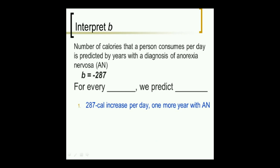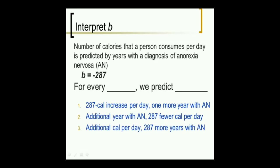Here's another one. The number of calories that a person consumes per day is predicted by years they've been living with a diagnosis of anorexia nervosa at the time of assessment. This is predicted by, so the number of calories consumed per day is y, and years since they developed anorexia is x. If b is negative 287, then the answer here is fewer calories consumed per day.